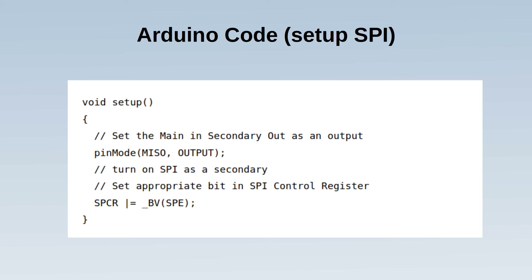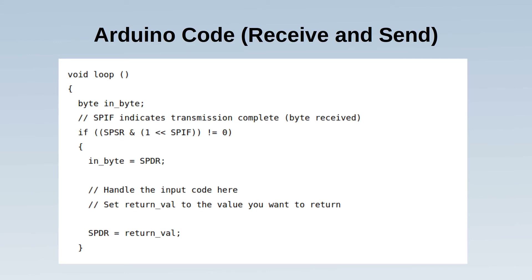In this case I'm polling the SPI registers to check for updates. The alternative is interrupt-based messaging — there are pros and cons to each, but polling works better for this example. This is the main code included in the loop function; note there is a large chunk of code in the middle shown as a comment, which is where the logic for handling the protocol is added.